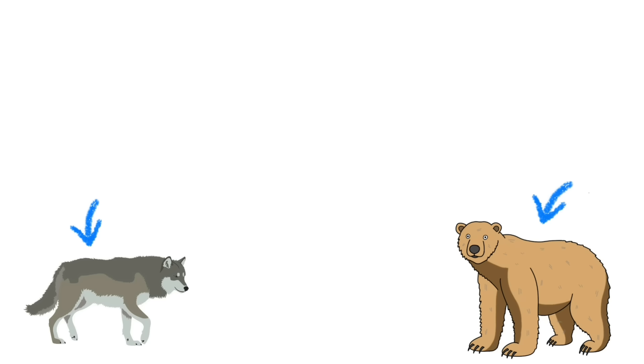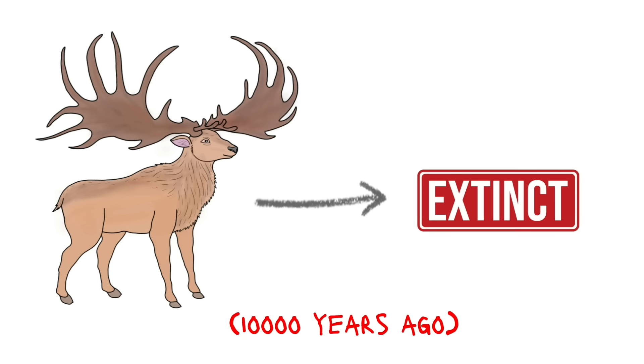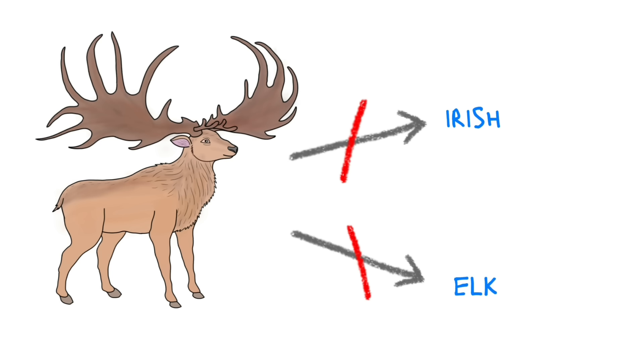Also, grey wolf and brown bears got free meals too. Then, Irish elk went extinct around 10,000 years ago. By the way, Irish elk were neither Irish nor elk. They were giant deer.